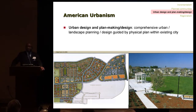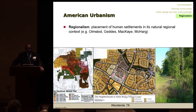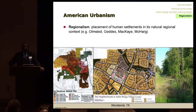Urban design, which is comprehensive — Mueller, Texas in Austin is an example. And regionalism, trying to place settlements in a regional context, through the efforts of Olmstead, Gates, McHarg, and McCart.